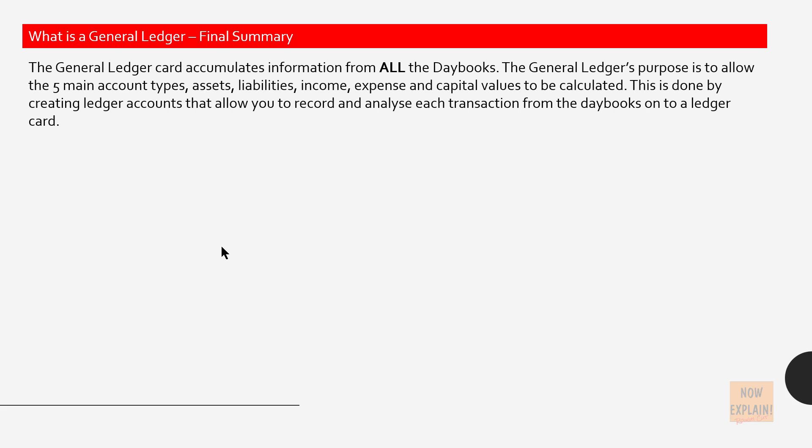The general ledger card accumulates information from all the daybooks. The general ledger's purpose is to allow the five main account types — assets, liabilities, income, expense, and capital values — to be calculated. This is done by creating ledger accounts that allow you to record and analyze each transaction from the daybooks onto a ledger card.